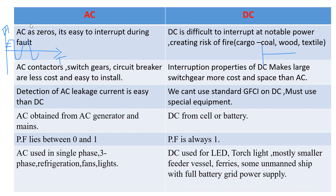The main reason AC is preferred on board is that AC machines are smaller, compact, easy to maintain, and lighter — leaving more space for cargo. AC machine fault interruption is very easy, and circuit breaker and switch gear design is cost-effective and easy to install. With DC, arc interruption may cause fire risk if the cargo includes combustible materials like coal, wood, or textile, requiring extra safety measures.